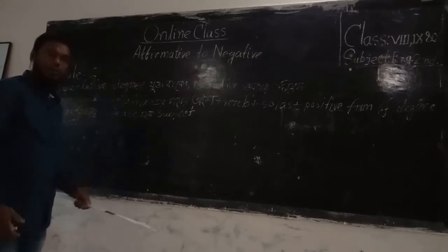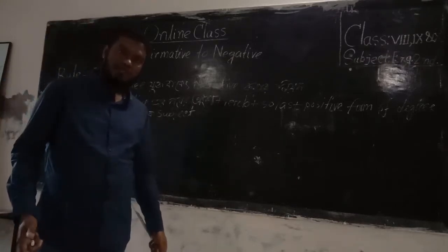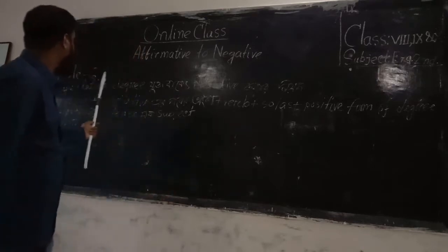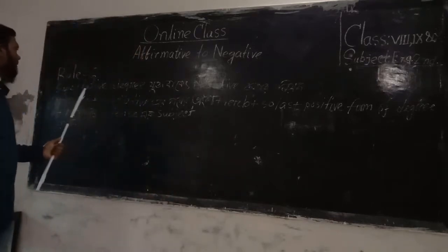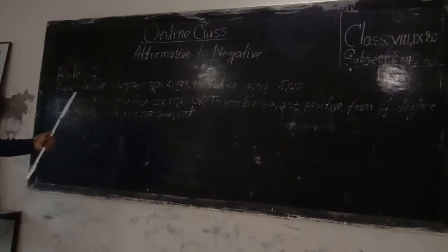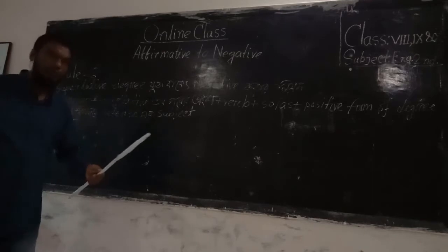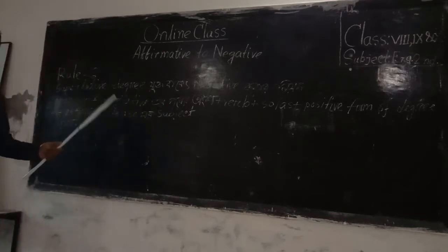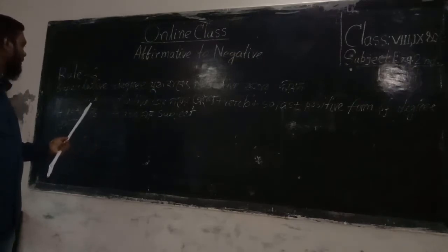We have already learned the basic five rules in my first class. Today, rule number six. If the affirmative sentence is in the superlative degree, then the rule will be: no other — and then the part of the sentence after the superlative degree.